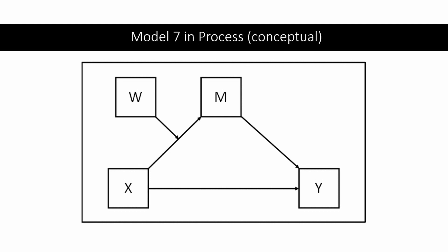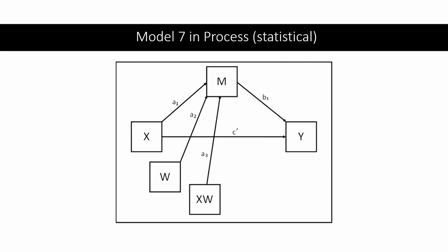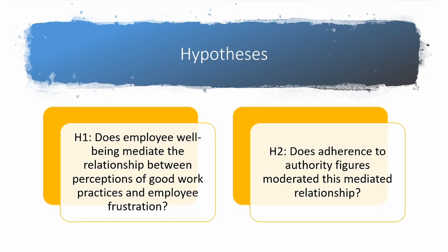Model 7 is the moderated mediation model. Conceptually, it looks like this: you have X and Y with a direct effect and also a mediation effect between X and Y represented by M, and W is the moderating effect which moderates the relationship that the mediator has between X and Y. Statistically, it looks like this.